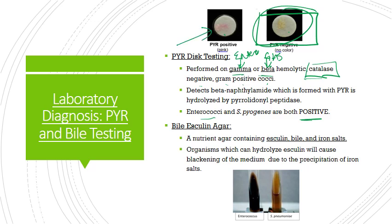The bile-esculin test is much easier to understand. You have agar containing esculin, bile, and iron salts. As the organism grows, if it has the esculin enzyme, it hydrolyzes the esculin, causing blackening of the media due to iron precipitation. Enterococci are bile-esculin positive because they're bile resistant. Strep pneumo shows no blackening — it's bile sensitive, so it falls apart in bile solutions.